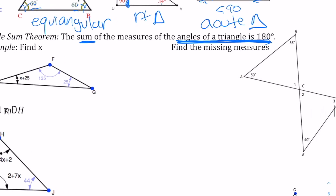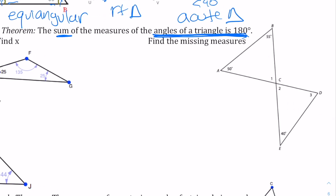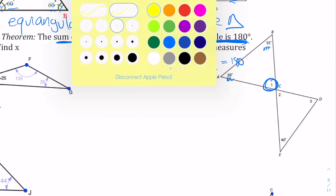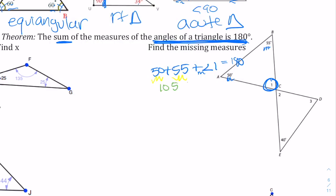To find the measurement of angle one, notice we have 50 and 55. So if I do 50 plus 55 plus the measure of angle one — remember, I use that little m to show it's the measurement — that has to equal 180 degrees. Get used to writing equations because we'll encounter more complex ones. These two are like terms, so adding them gives us 105 plus the measurement of angle one equals 180 degrees.